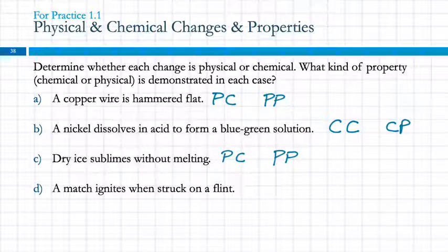A match ignites when struck on a flint. That's going to be a chemical change. After you light the match, and you watch it burn, and you're like, oh, I don't want to burn my fingers, we'll snuff it out there. Could I do that again, or has the match been changed? The match has been very changed. Anything that involves burning, combustion, is going to be a chemical change. So a match ignites when you strike it on a flint. Is that a chemical property or a physical property? It's a chemical property.